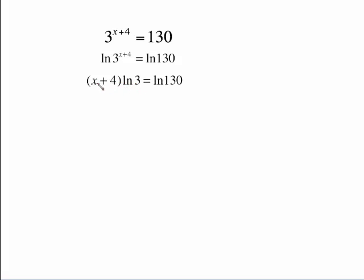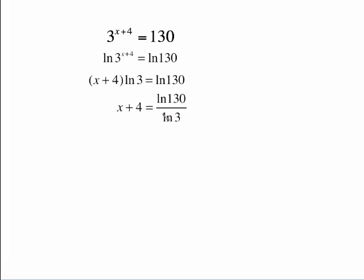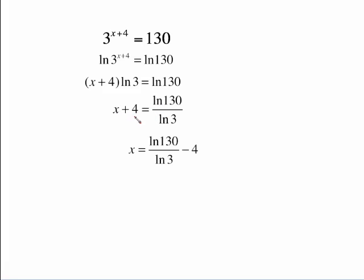This is blah blah blah times ln of 3. Let's divide both sides by ln of 3. This is still x plus 4. The only way to get this x alone now would be to subtract 4 from both sides. You can't take 4 from this right here until you type it into the calculator. But this is your exact answer for this problem.